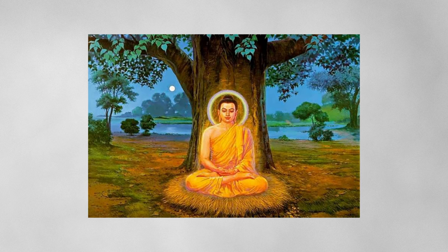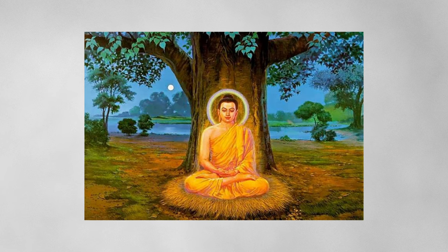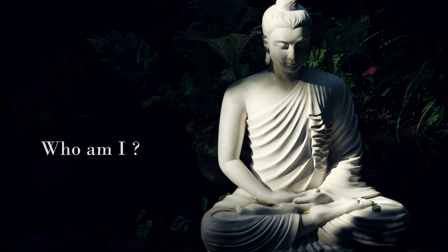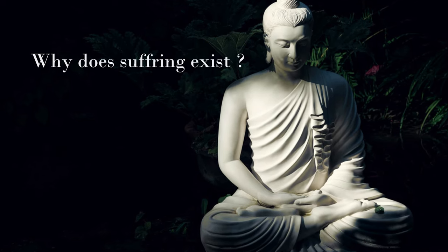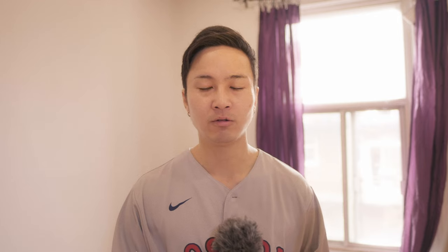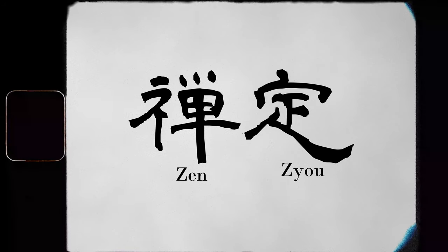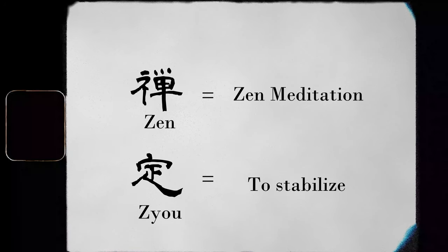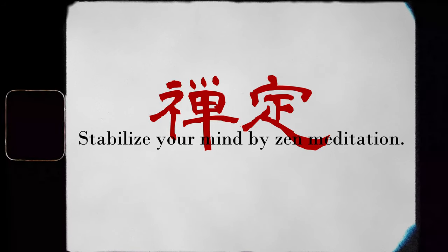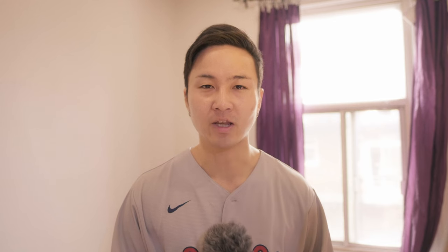He analyzed how Buddha achieved enlightenment. Buddha had been meditating and asking himself: Who am I? Why does suffering exist? Then after all, he reached there. His state of enlightenment is called Zen Jou. Zen is from Zen meditation; Jou means stabilize — so it means stabilize your mind by Zen meditation. That's how he reached the condition of enlightenment.